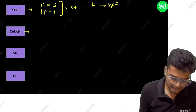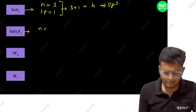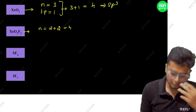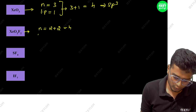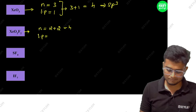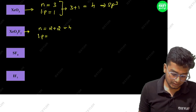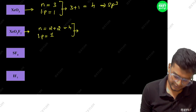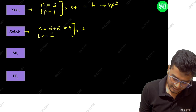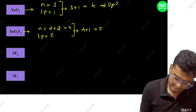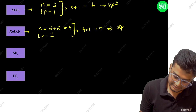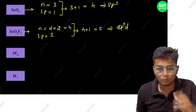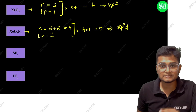Now, XeO2F2. Number of atoms: 2 oxygen plus 2 fluorine, total 4 atoms. Lone pairs on xenon: 1. So 4 plus 1 equals 5. That gives SP3D hybridization. XeO2F2 is SP3D.